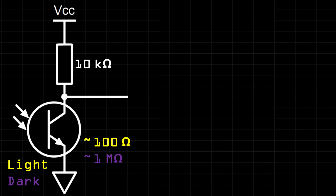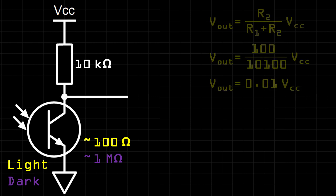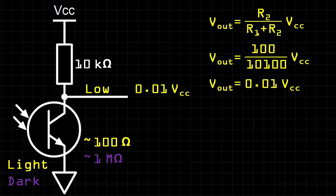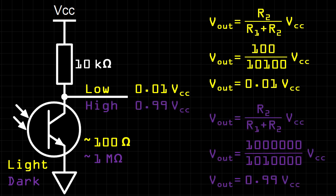We can see why if we use the voltage divider equation. For the light case, we calculate an output voltage of 0.01 VCC, which is clearly a low state. Calculating for the dark case, we find an output of 0.99 VCC, a clear high signal.